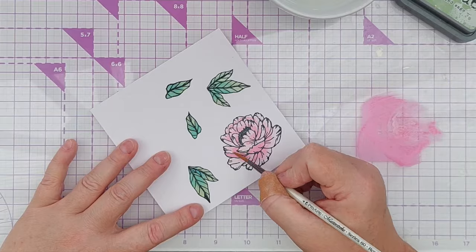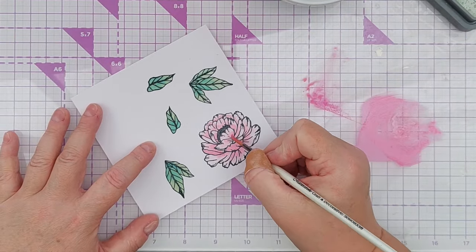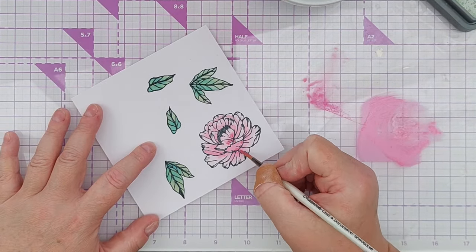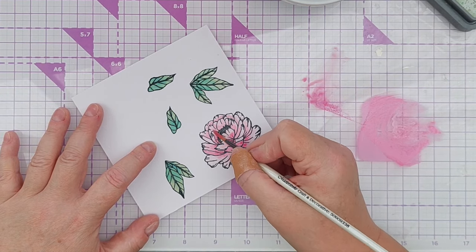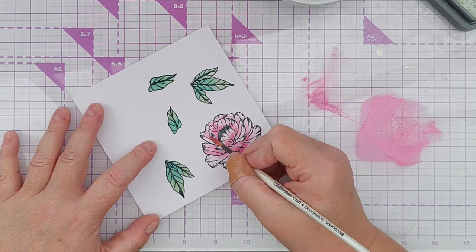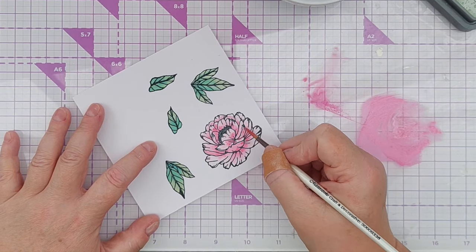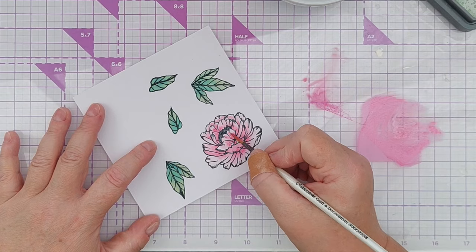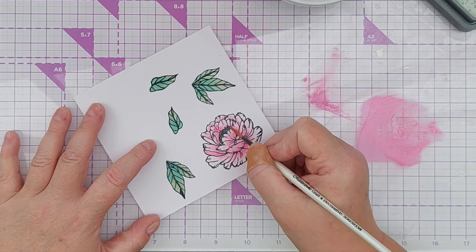For my darkest color I used Picked Raspberry, and I added just a little bit of that in the areas where there would be the very darkest shadow, so around the middle and underneath the second row of petals—so the shadow is on the very bottom row of petals.